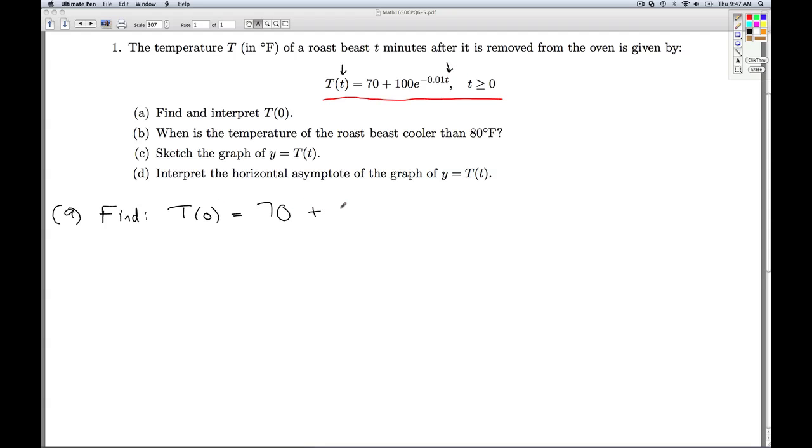So it's 70 plus 100 e to the negative 0.01 times 0, which is 70 plus 100 e to the 0. e to the 0 is 1, so I get 170. So that's the find part.